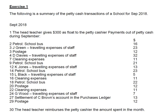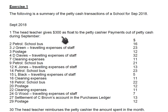On the 1st of September, the head teacher gives $300 as a float to the petty cashier, with payments out of the petty cash during September. Before going through this exercise, I would strongly recommend that you go through the concepts lecture for petty cash — it is around a 10-minute lecture. We are assuming that we are the petty cashier, and $300 is a float so that we can run the general expenses for the school.